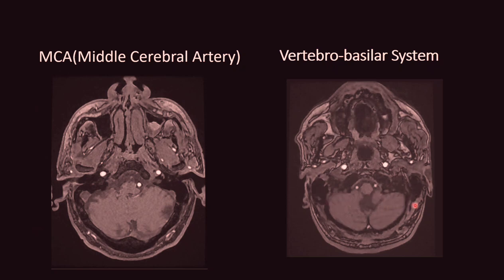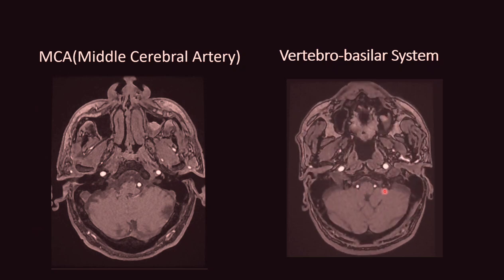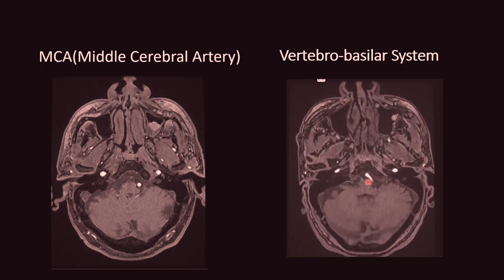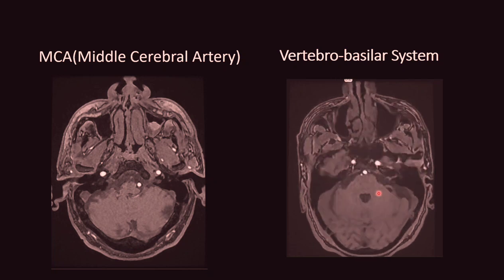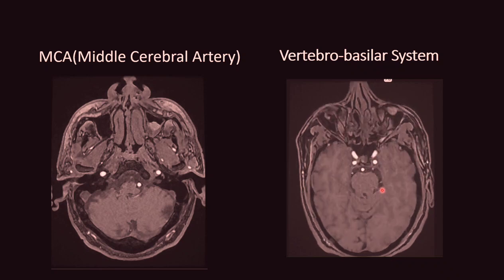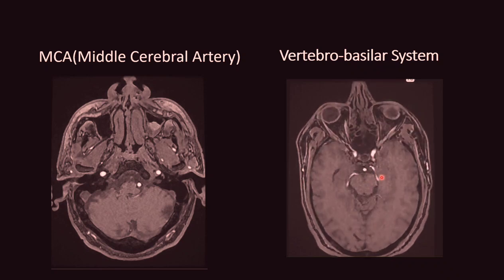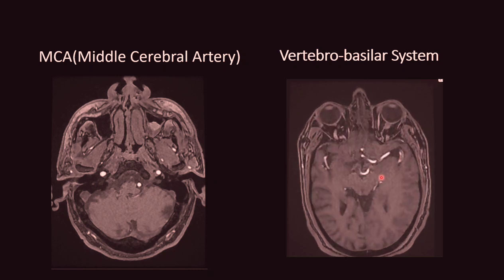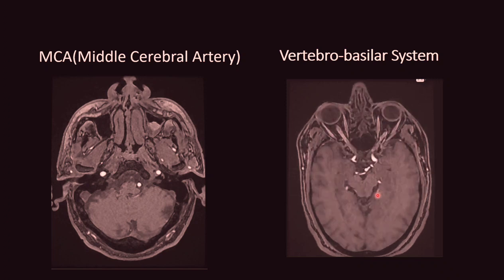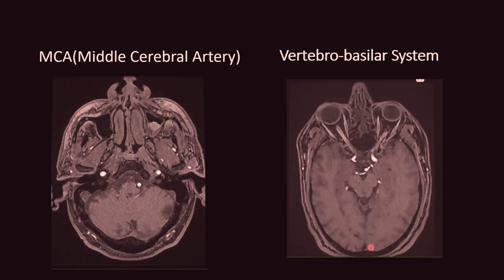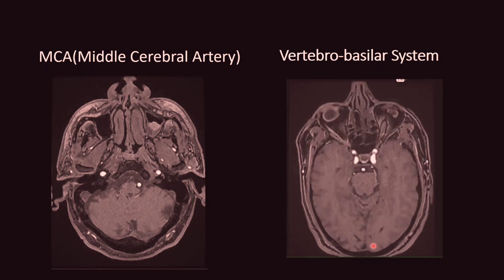Here is the MR TOF video showing the vertebrobasilar system, including both vertebral arteries ascending to form the single basilar artery, which just before bifurcation gives off the superior cerebellar artery. The terminal bifurcation forms the bilateral PCA with the P1 segment, then the P2 segment looping around the midbrain, then the P3 segment in the occipital lobe sulci, and finally the P4 and P5 terminal segments.